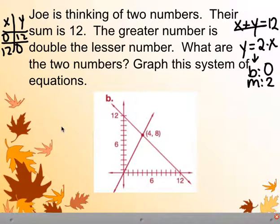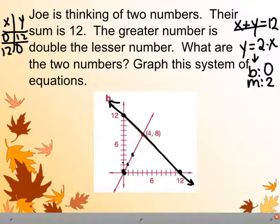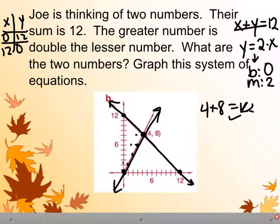When we graph, our first line has intercepts at 12 and 12. For our second line, we start at the y-intercept of 0 and go up 2 over 1 repeatedly to get that line. They intersect at 4, 8. Checking: 4 plus 8 equals 12 — that works. And y equals 8, does that equal 2 times 4? It sure does.